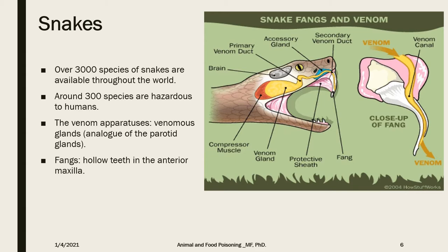The venomous apparatus of snakes consists of venomous glands, which are analogous to the parotid glands, and produce and store the venom. Venom canals connect the glands to the fangs, and the palatine muscle squeezes the glands to inject the venom. The fangs are specialized hollow teeth located anteriorly in the maxilla, and through these hollow teeth the venom is injected into the body of the victim.